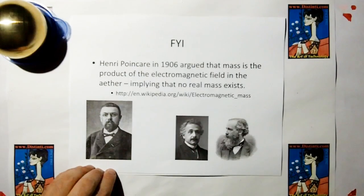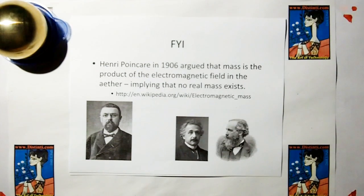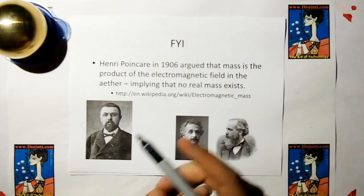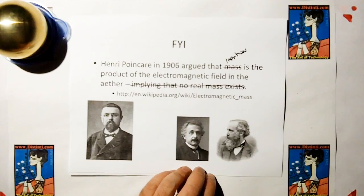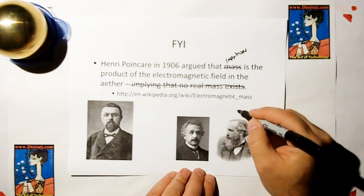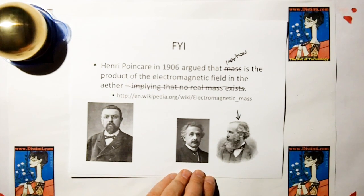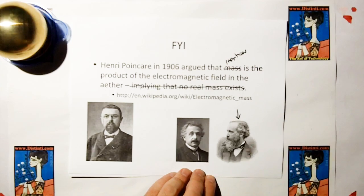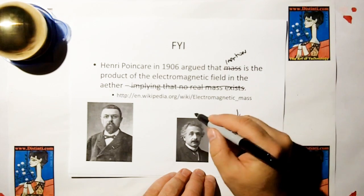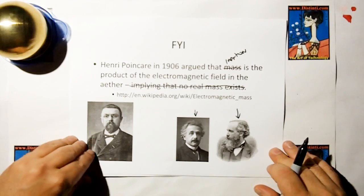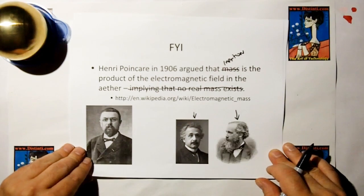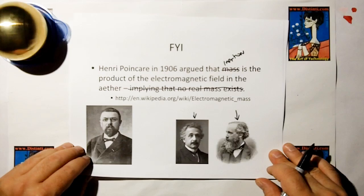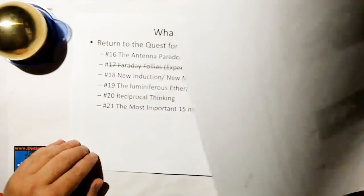Henri Poincaré in 1906 argued that mass is the product of the electromagnetic field and ether — spelled with an A back then — implying no real mass exists; what it really means is inertia, which is all you need for geomechanics. Unfortunately he couldn't complete the work because they had a bogus model of electromagnetic induction. When Einstein came out with his work, he solved a lot of questions and people ignored the whole question of the aether. Back in the 70s, we had every belief we'd be standing on the shores of a distant star by now — and we haven't gotten very far.